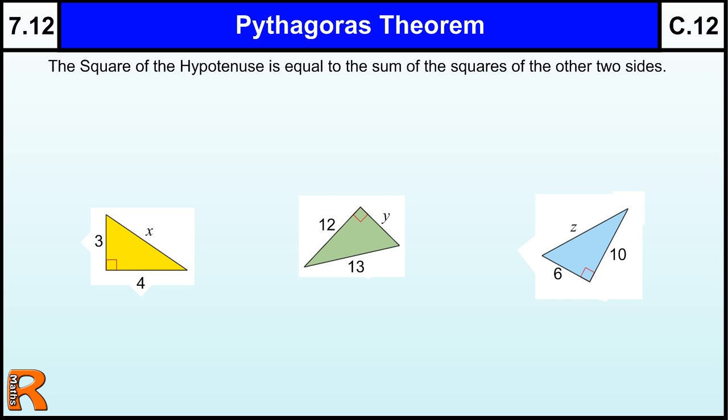Okay, so Pythagoras' Theorem says the square of the hypotenuse is equal to the sum of the squares of the two sides. Now that can sound quite complicated when you first come across it, but the idea, once you get used to it, is fairly straightforward.